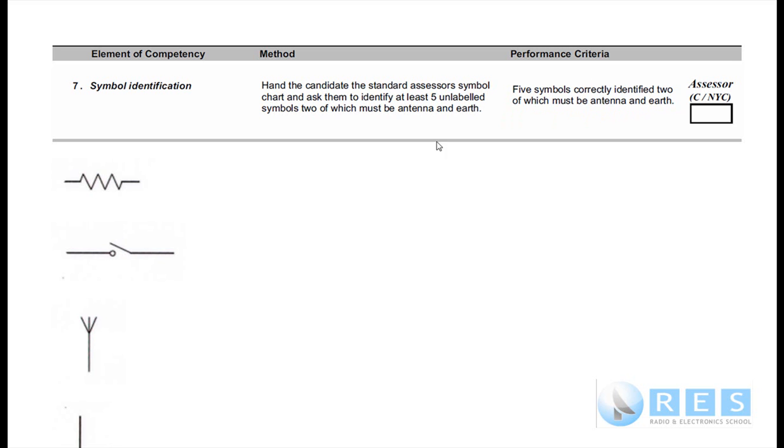Your performance criteria: there are ten symbols. Remember, five symbols correctly identified, two of which must be antenna and earth. So your job to pass this competency is to learn at least five of these symbols, and two of them must be antenna and earth.